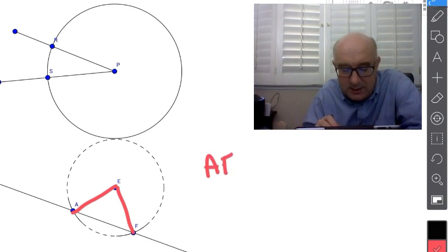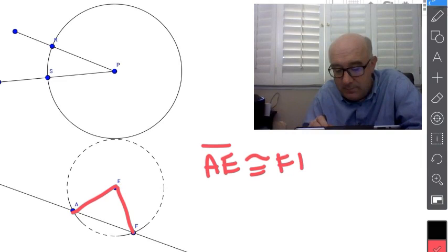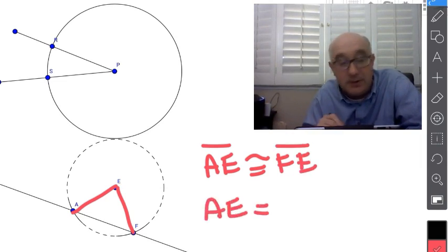So AE is congruent to FE and that would imply also by the definition of congruence that their measurements must also be equal. But also because those are radii of a circle, they must be equal.